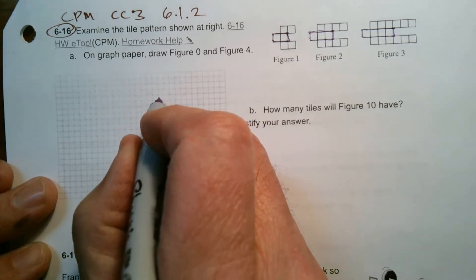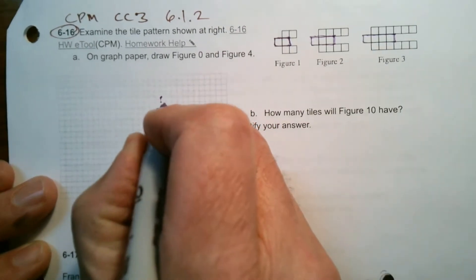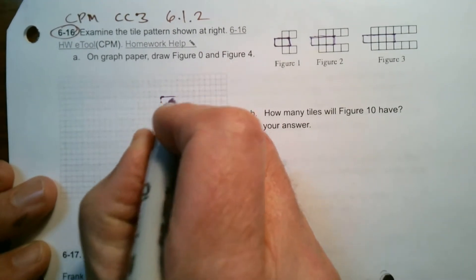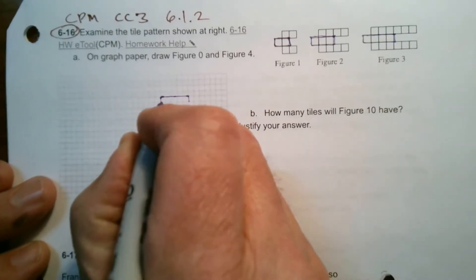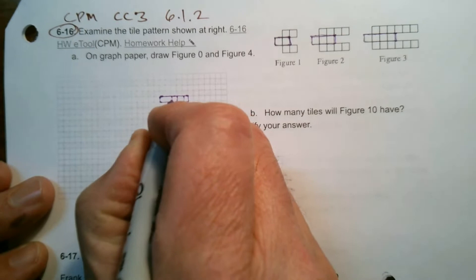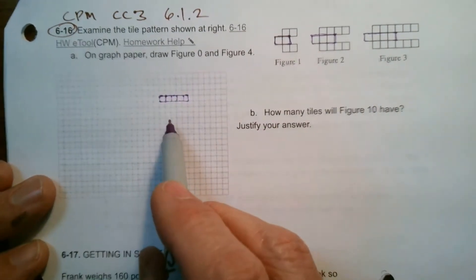So if I want to do Figure 4, I'm going to use my little tiles here. There's 1, 2, 3, 4 in Figure 3, so I need 1, 2, 3, 4, 5 in Figure 4. So that center will have 5 for Figure 4.